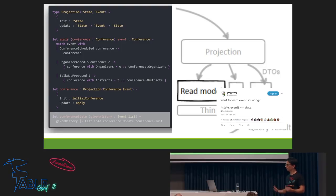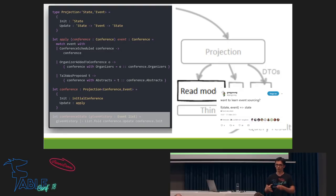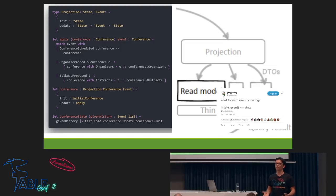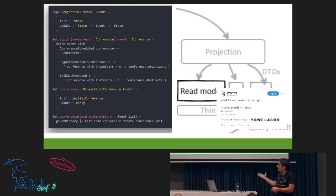The apply function takes a state and an event and returns a new conference. We do pattern matching over the event: if an organizer was added to the conference, just add them to the list. That's a projection for one event. But we have more than one event in our system for one entity or aggregate. How do we get all of it out? It's just a fold. That's the second thing Greg Young always said: 'Want to learn event sourcing? Just do a left fold over the events.'